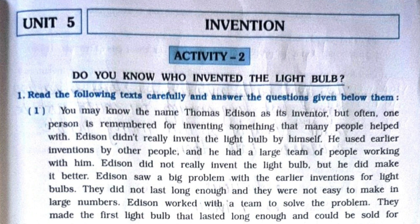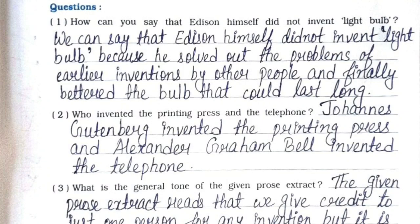We'll be starting with the question answers. First one: how can you say that Edison himself did not invent the light bulb? We can say that Edison himself did not invent the light bulb because he solved out the problems of earlier inventions by other people.